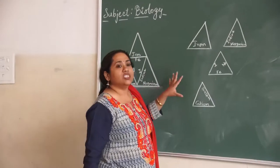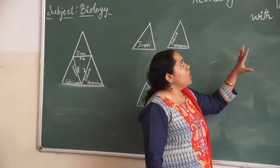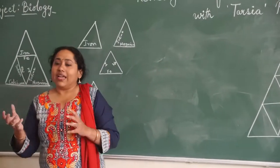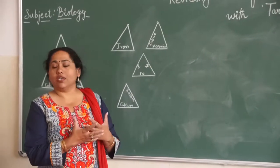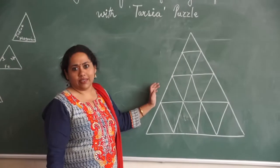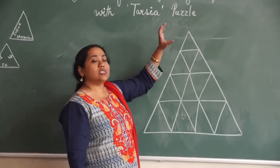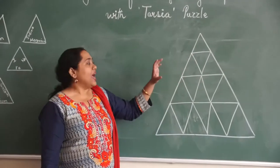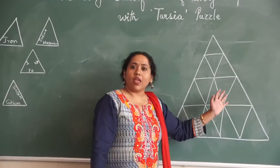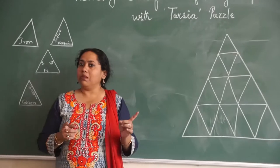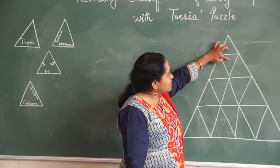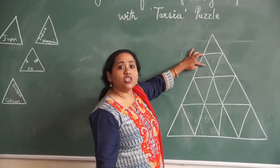Now a similar Tarsia puzzle I am going to give you, based on classification of living organisms. You are in 9th standard, so it is going to be a more difficult Tarsia grid. I am going to give you a Tarsia grid of 16 triangles — 16 triangular cards — and you arrange them to make a bigger triangle. The key rule is that across the sides of each triangle, there should be matching words.